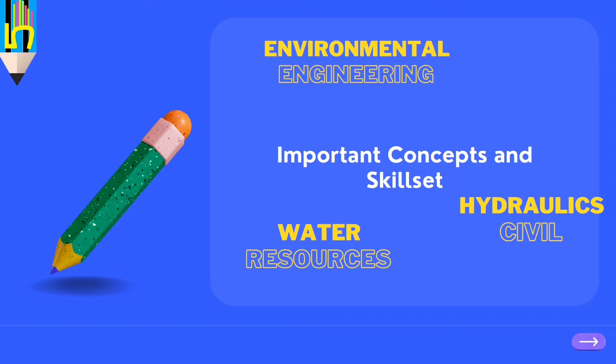The next thing is important concepts and skill sets. There are so many topics covered during graduate or postgraduate training, but not all of them are equally important for a particular job. There are a few things you need to be very good at. For a particular software, say Google Earth, you don't need to know every detail from start to end — you need to know certain key things.